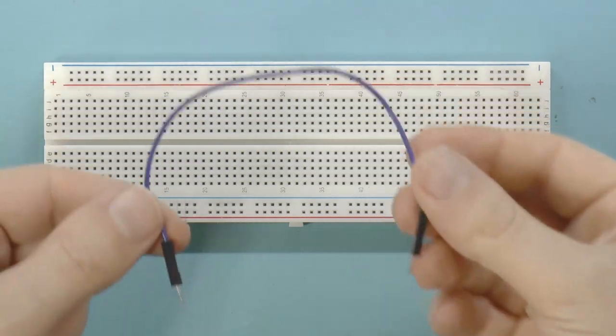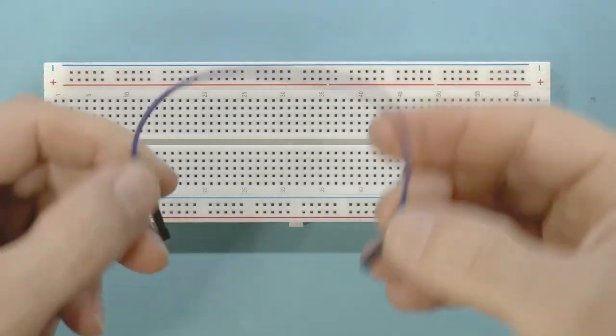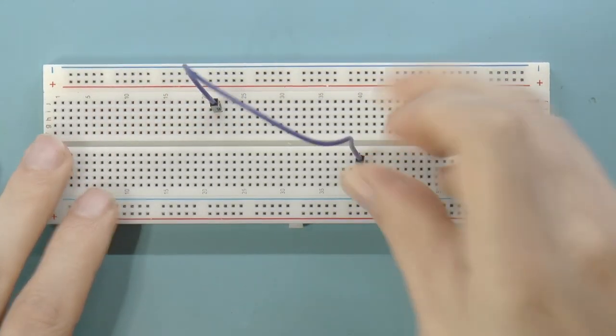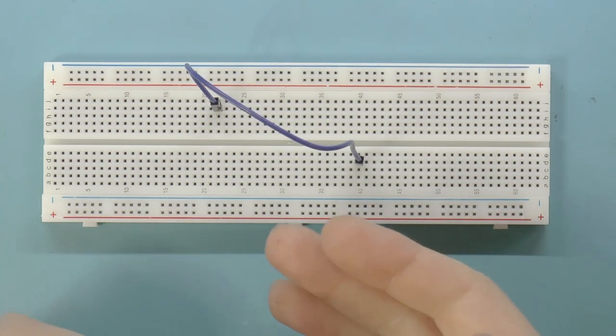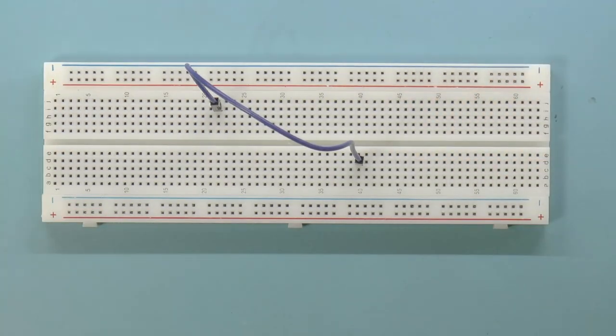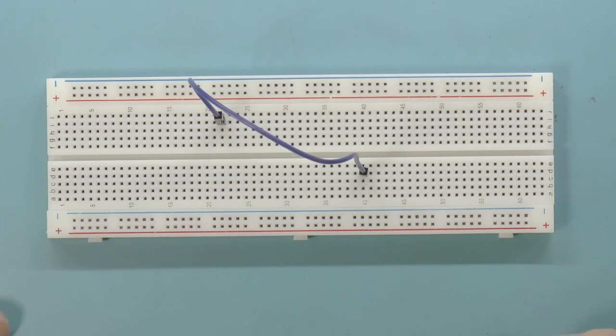You can use regular jumpers like this, they're of fixed length, and then you can just wire point to point. The problem is that when you've got 10, 20, 30, 40 of these jumpers, it just looks like a big jumbled mess. It's not very nice to look at, it's not very photogenic, it's not very YouTube-genic.